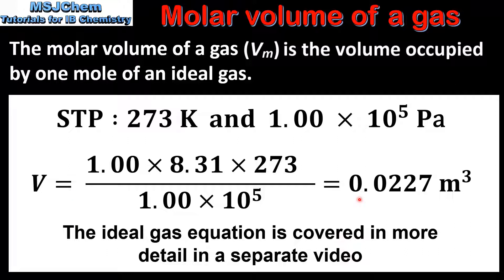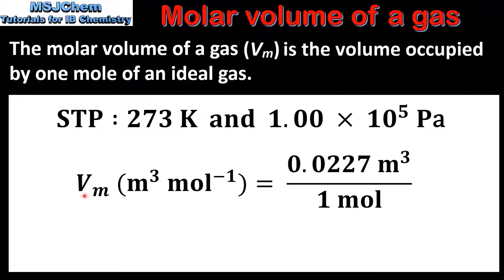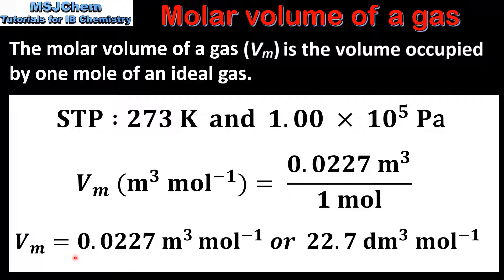This gives us a volume of 0.0227 metres cubed. The molar volume can be determined by dividing the volume by the amount in moles. In this equation we have a volume of 0.0227 metres cubed, which is the volume occupied by one mole of an ideal gas. So this gives us the molar volume of an ideal gas under conditions of STP, which is 0.0227 metres cubed per mole or 22.7 decimetres cubed per mole.